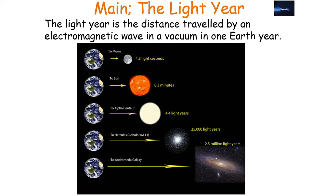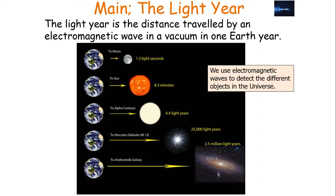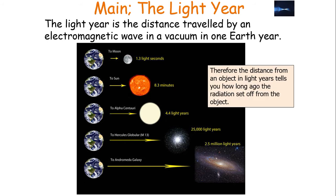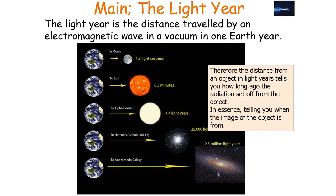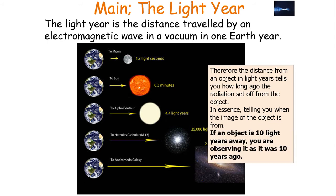The light year is the distance travelled by an electromagnetic wave in a vacuum in one Earth year. We use electromagnetic waves to detect the different objects in the universe — we know that stars, galaxies, and quasars exist because they emit electromagnetic radiation. The distance from an object in light years tells you how long ago that radiation was emitted from that object. In essence, it's telling you what the image of the object looks like and how long ago it was. So if an object is 10 light years away, you are observing it as it was 10 years ago.